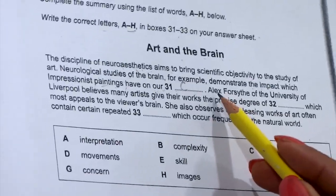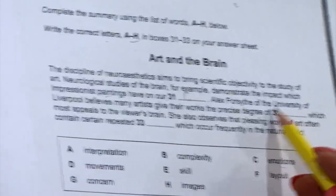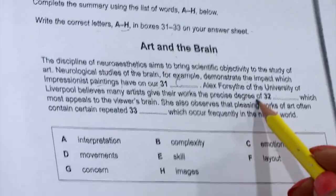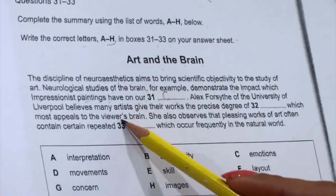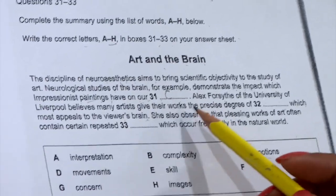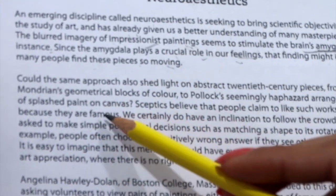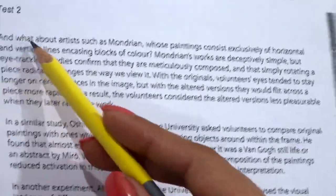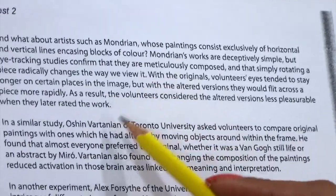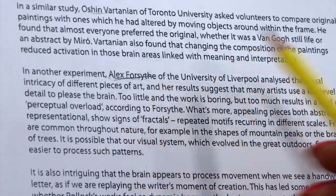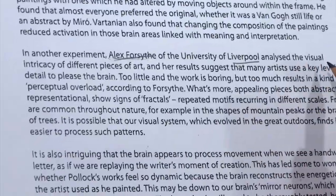Then we will move to question 32: 'Alex Forsyth of the University of Liverpool believes many artists give their works the precise degree of [gap] which most appeals to the viewer's brain.' Now, Alex and Liverpool and artists are our keywords. We will quickly move to the passage again. We will see the next passages — they are talking about Angelina, then Robert, then Ocean. When we go to the second page, third paragraph, they are talking about Alex Forsyth of the University of Liverpool. Now we know we have got the correct location.